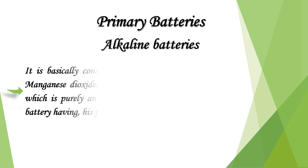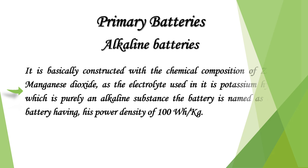Alkaline batteries are constructed with a chemical composition of zinc and manganese dioxide. The electrolyte used is potassium hydroxide, which is an alkaline substance — hence the name alkaline battery. These batteries have a power density of 100 watt-hours per kilogram.